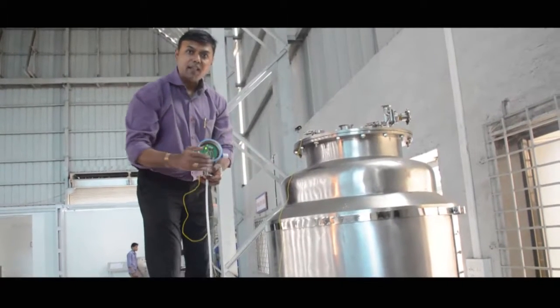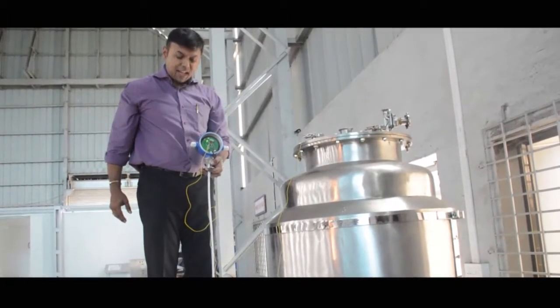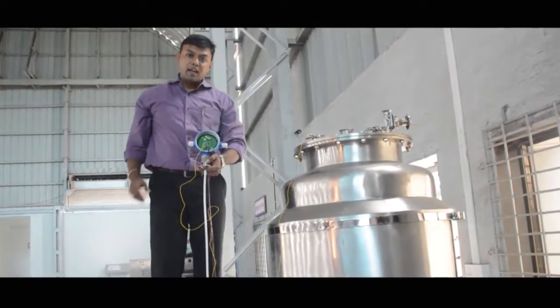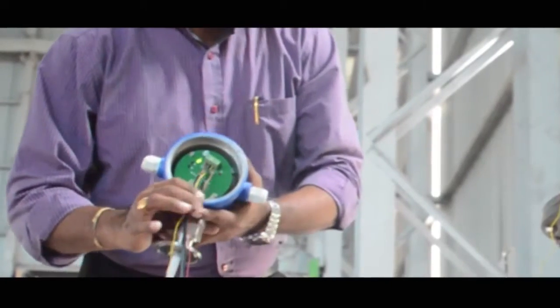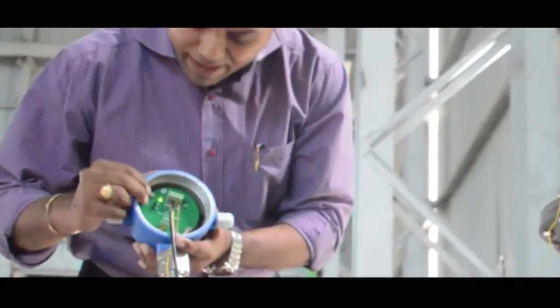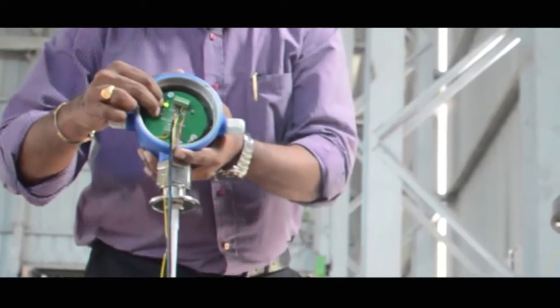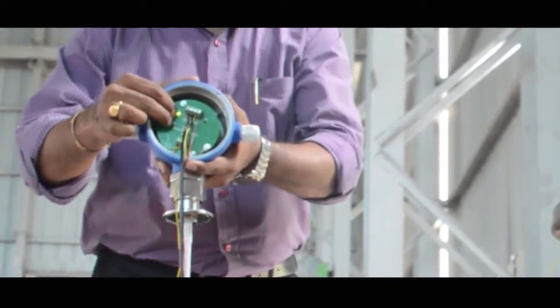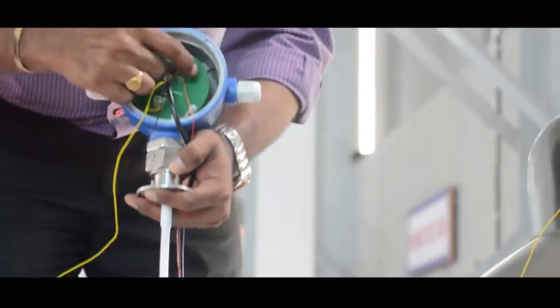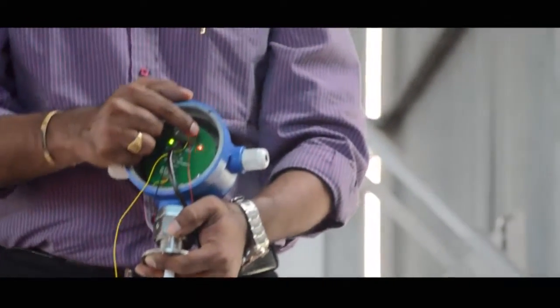After filling it full, we will start the calibration process. To start the calibration process, we will see that we have two buttons - minimum and maximum. We will press the minimum and maximum push buttons together. When we press them together, the calibration LED will blink, and on the multimeter you should see 4 milliampere. If you see 4 milliampere, after that you need to press the minimum button once.